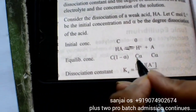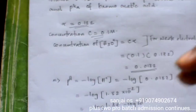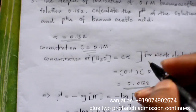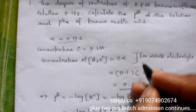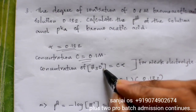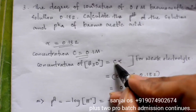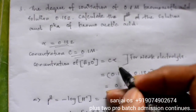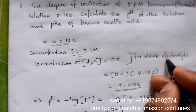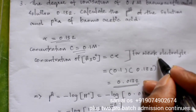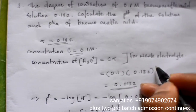Concentration of H₂O plus is C alpha. That's what we consider for a weak electrolyte, as mentioned in Ostwald's dilution law.